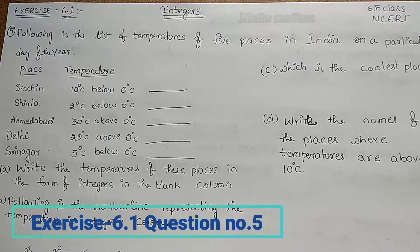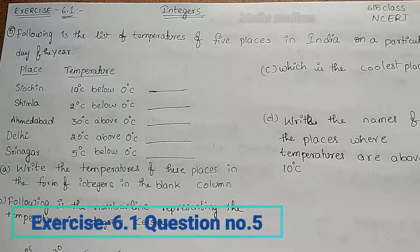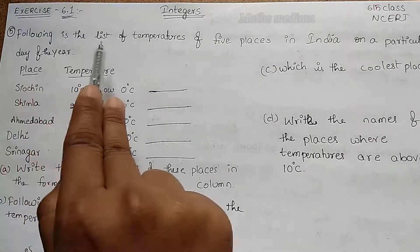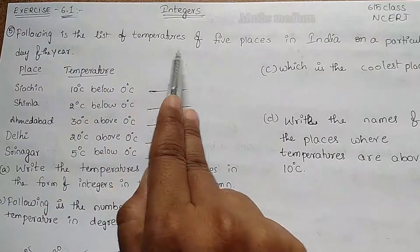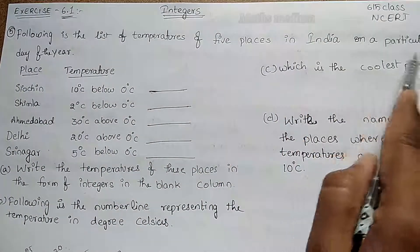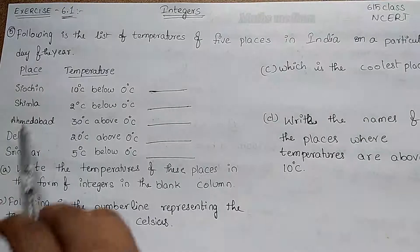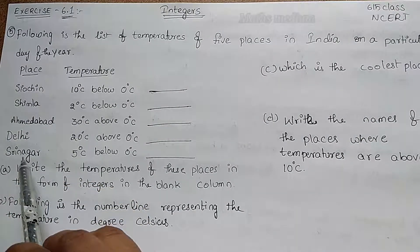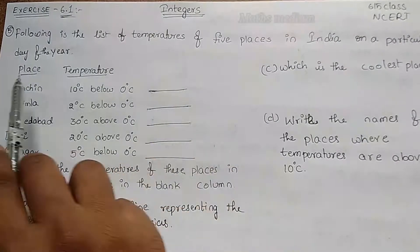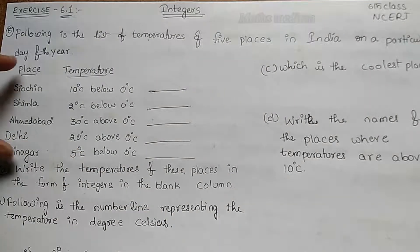Hi, hello, welcome to Maths Medium. Today I came with Exercise 6.1 from Chapter 6 (Integers), Class 6 NCERT. The question is: following is the list of temperatures of five places in India on a particular day of the year. Here, some of the places are given with their temperatures, recorded on a particular day of the year.